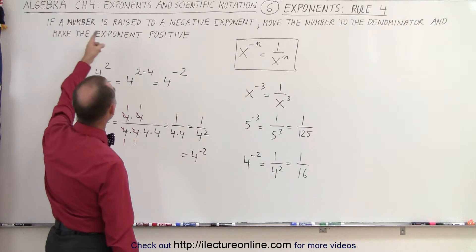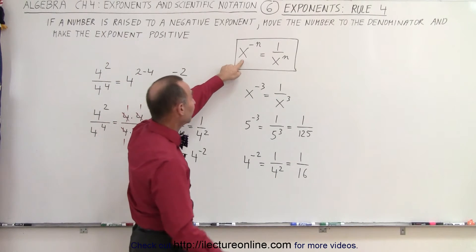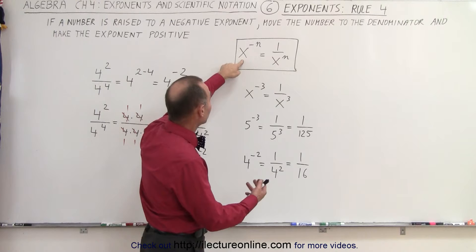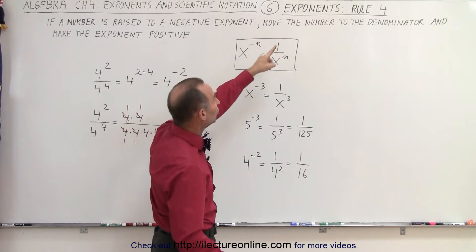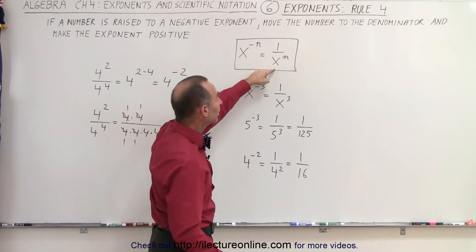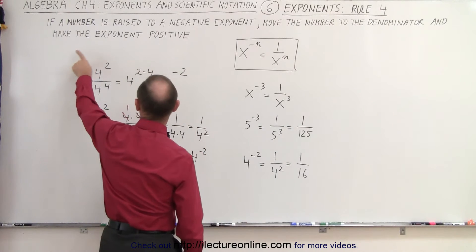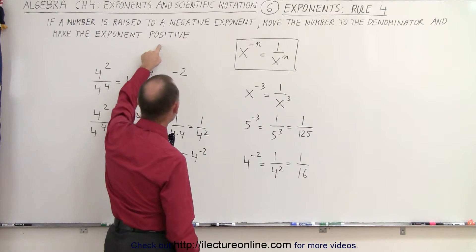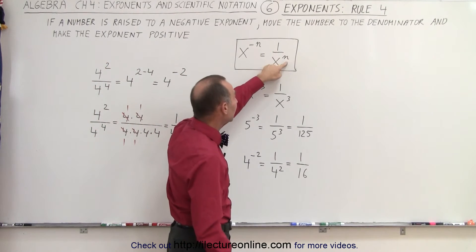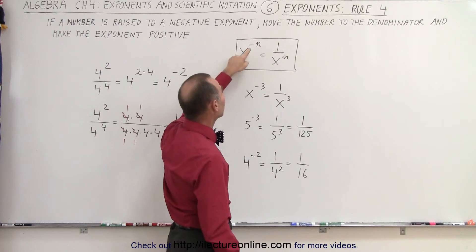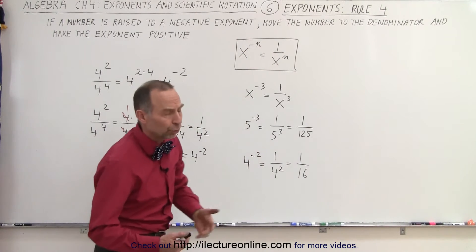If a number is raised to a negative exponent — like let's say x is a number and it's raised to a negative exponent — then move the number to the denominator and make the exponent positive. So you write 1 over x to the positive n, instead of x to the minus n. That's the rule.